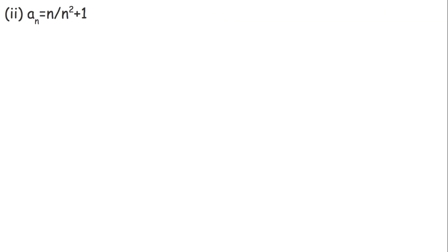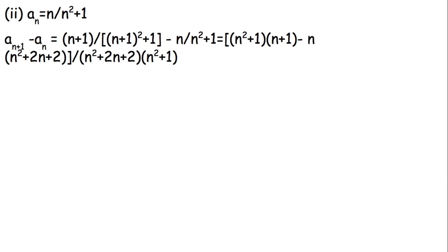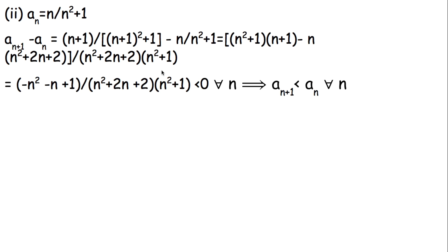Now let's discuss the convergence of the second sequence AN = N/(N²+1). First we check monotonicity. Computing AN+1 − AN: [(N+1)/((N+1)²+1)] − [N/(N²+1)], taking the LCM gives numerator (N+1)(N²+1) − N((N+1)²+1), which simplifies to −N²−N+1 in the numerator over (N²+2N+2)(N²+1) in the denominator. For any natural N this is negative, so it is a decreasing sequence.